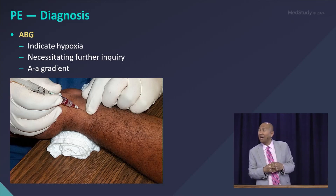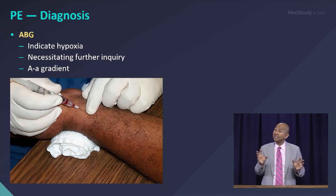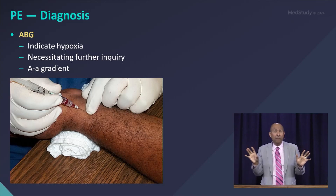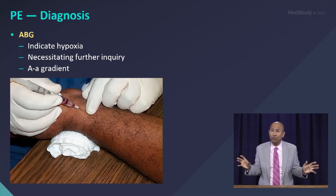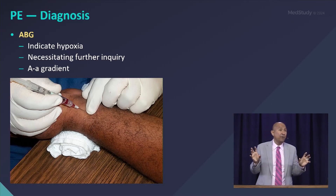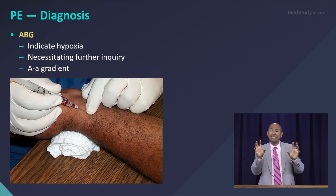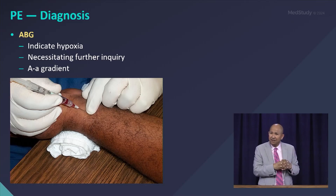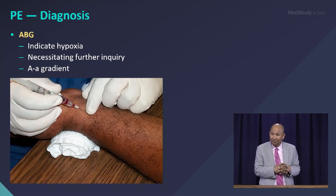Can you diagnose a PE solely based on a chest X-ray? The answer is probably not. But this is a classic board review question: what is the most common finding on a chest X-ray in a pulmonary embolism? Essentially normal is the right answer. A radiologist might say maybe a little pleural effusion or some atelectasis, but there are also classic findings like wedge infarcts.